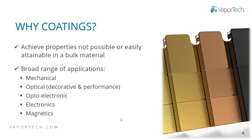Why would you apply coatings? The basic answer is it's difficult to get a material that has all the properties in bulk. Some of these materials either are not hard enough or do not have the color that you want. So you work with a base material — be it plastic, metal, or ceramic — and apply this coating on top to improve mechanical properties, optical properties, or electronic properties. In mechanical applications, you can think of consumer goods such as watch coatings, or tools used in machining or injection molding.